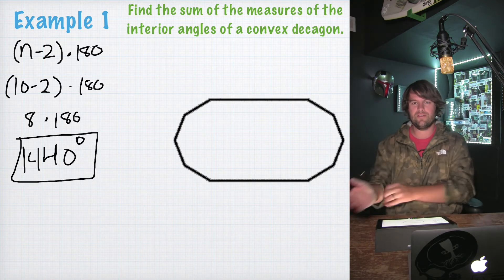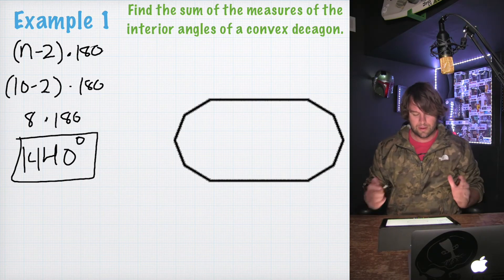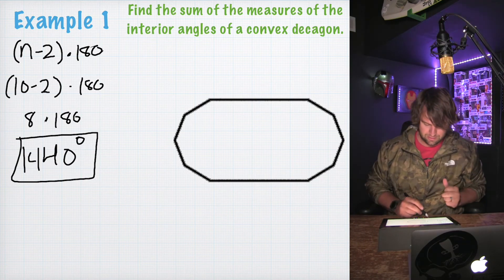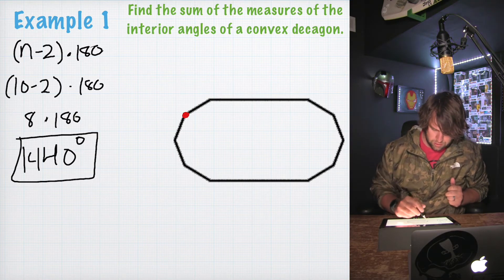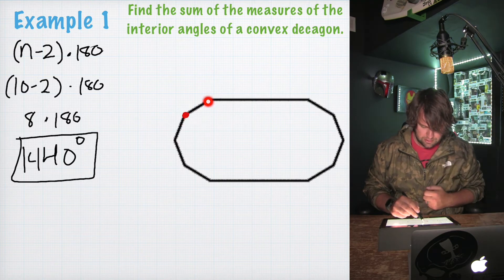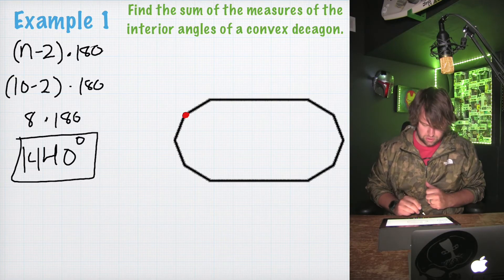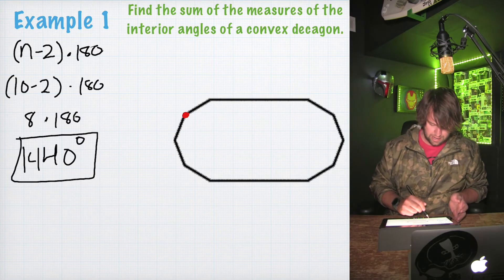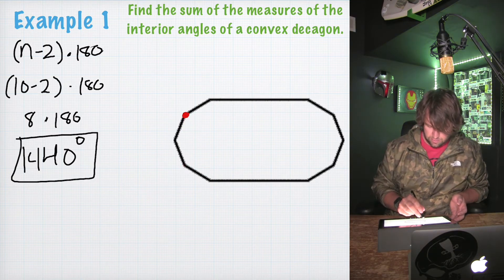I want to quickly show you what you would have learned in the activity about connecting two non-consecutive vertices. I'm going to pick a point here. The only two vertices consecutive to this point are the ones directly next to it — you cannot draw a line to them to form a triangle. So if we draw diagonals from this point to all the other vertices, you'll see we form triangles.